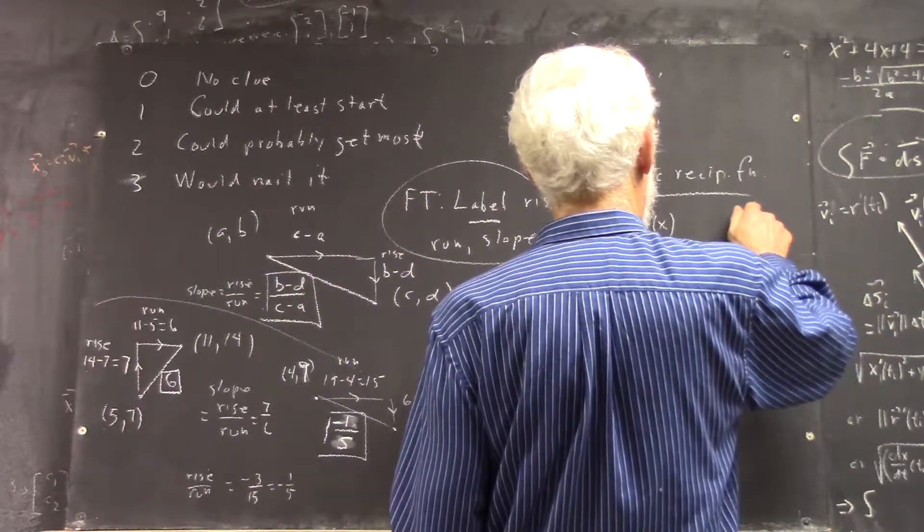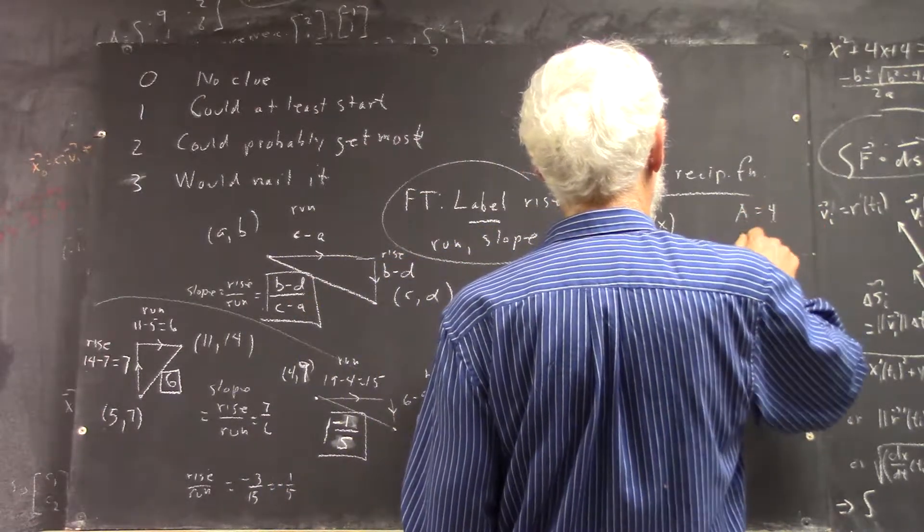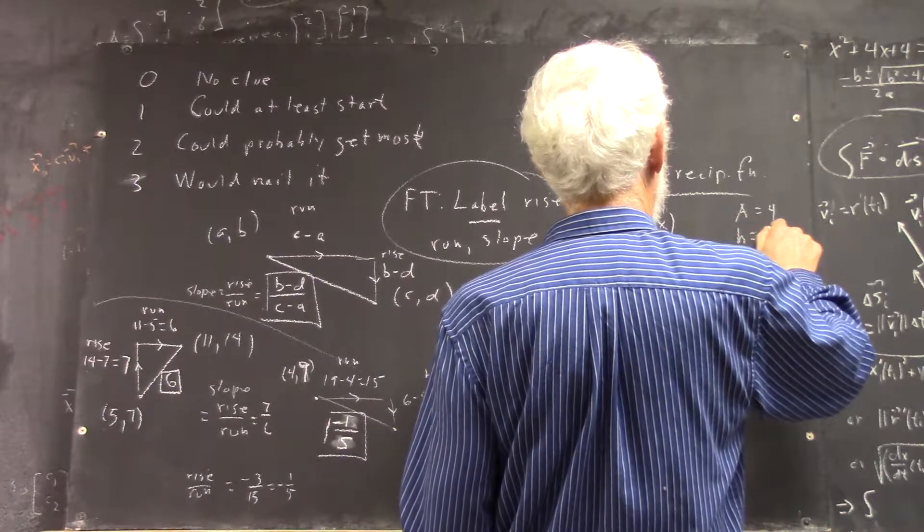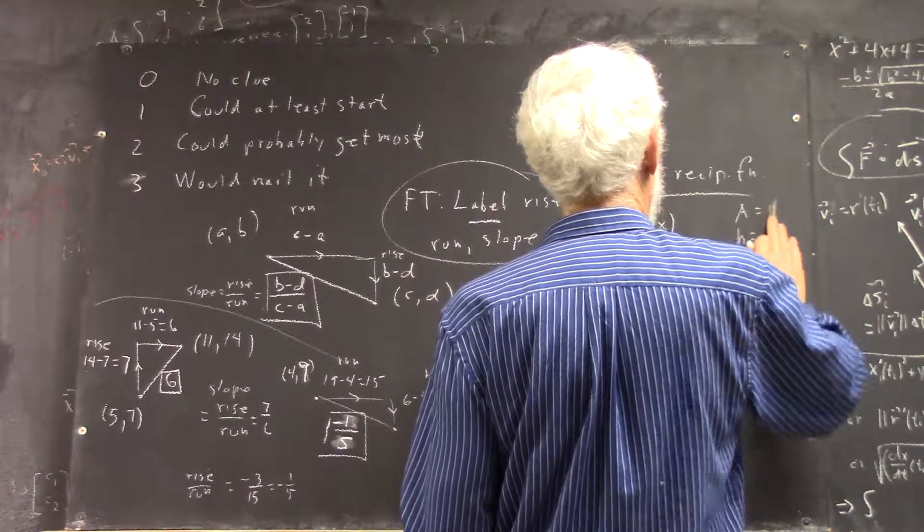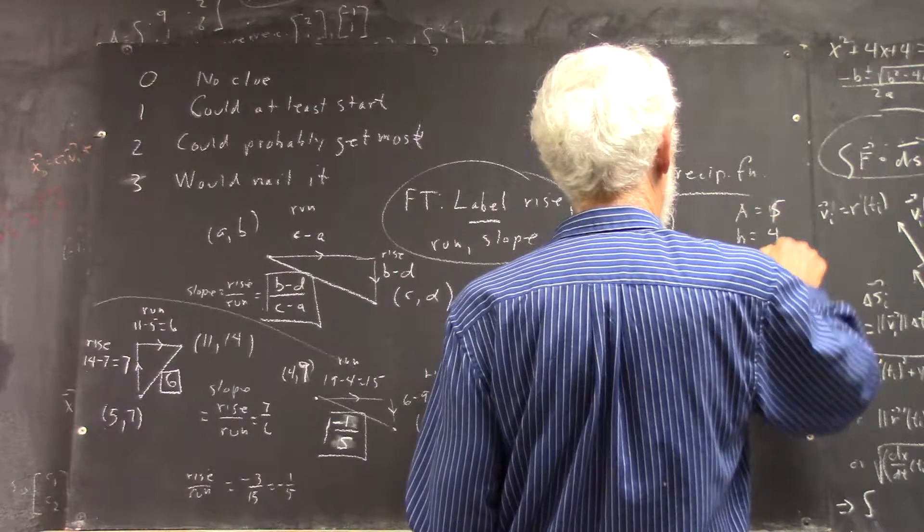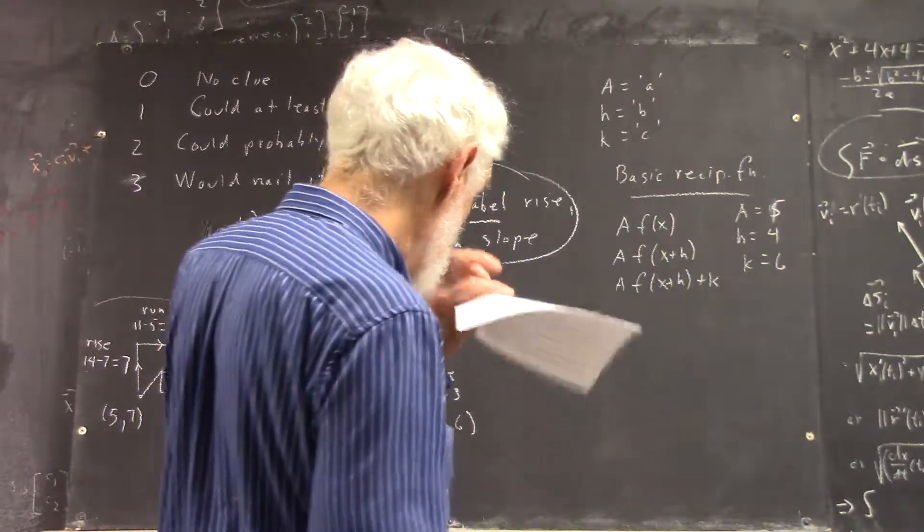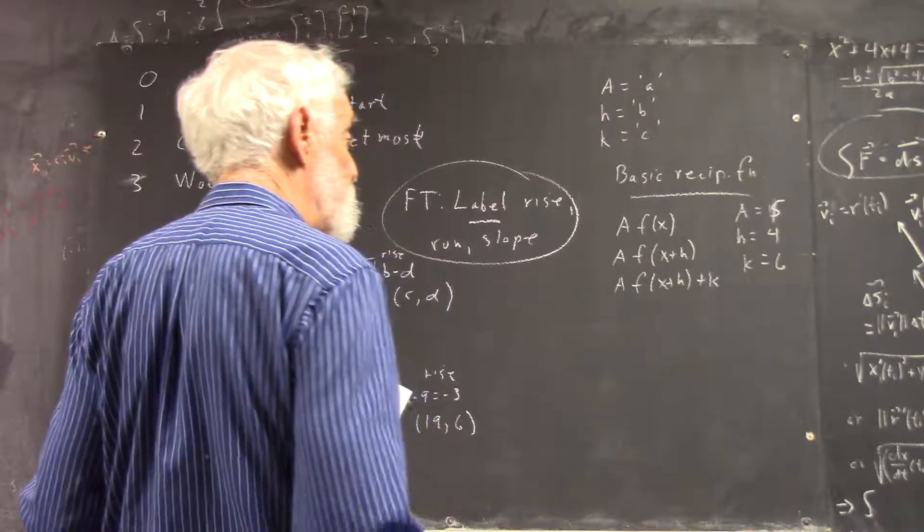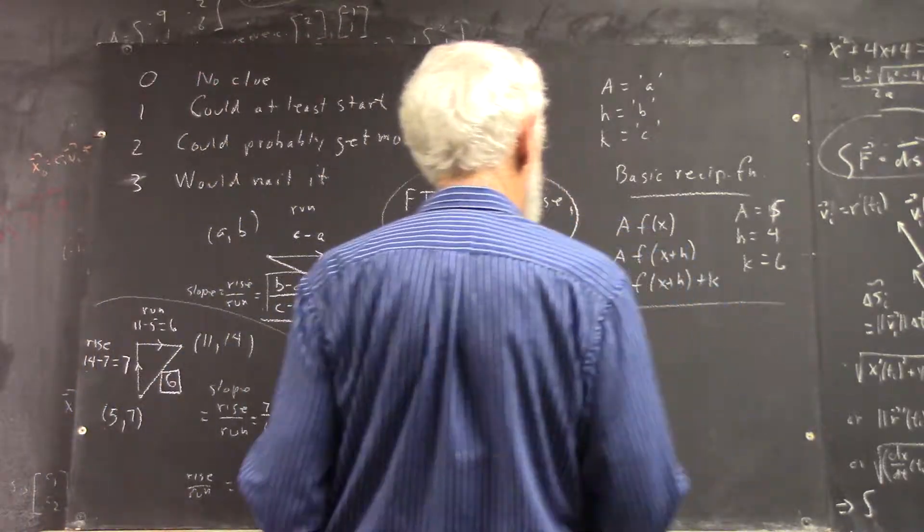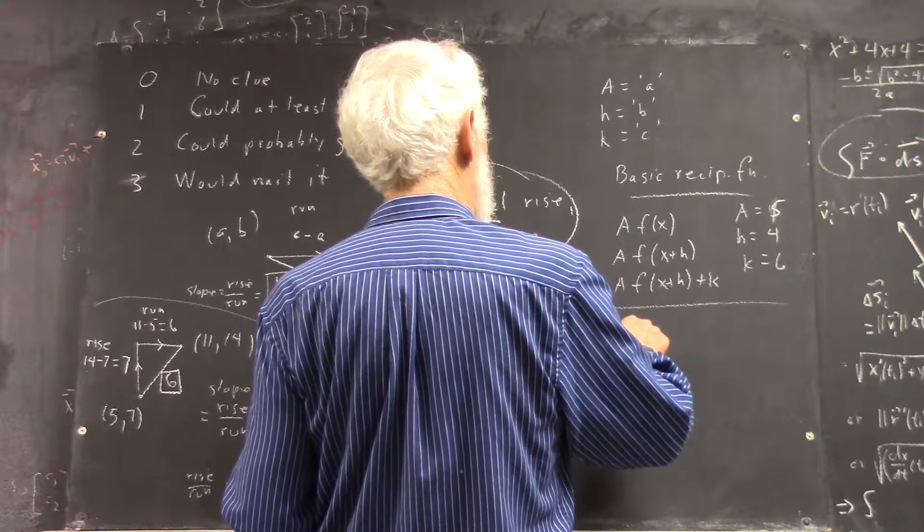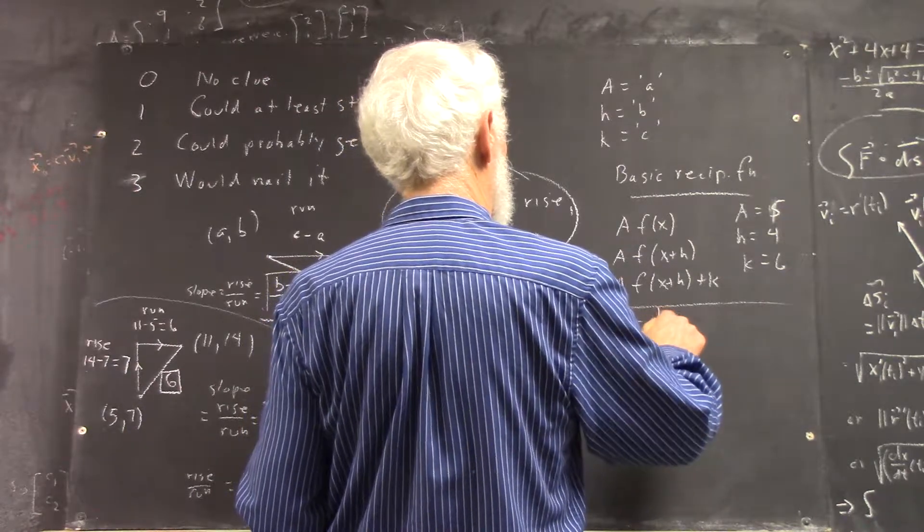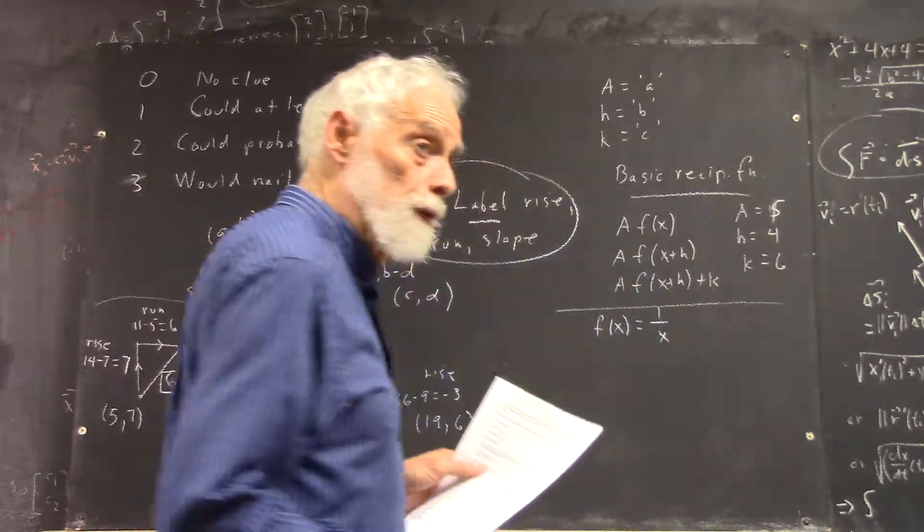so a equals 4, h equals, I'll use 5 for h, h is 4, and k is 6 because I've got to promote one. Okay, then basic reciprocal function is 1 over x.